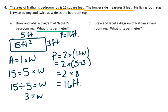Part B says, draw and label a diagram of Nathan's living room rug and what is the perimeter. Let's underline what we know about his living room rug. His living room rug is twice as long and twice as wide as his bedroom rug.